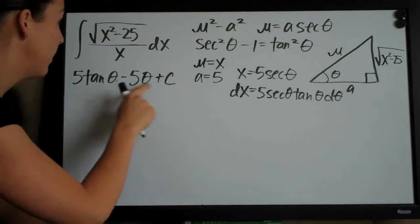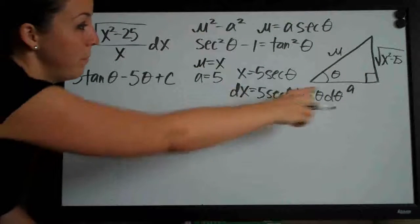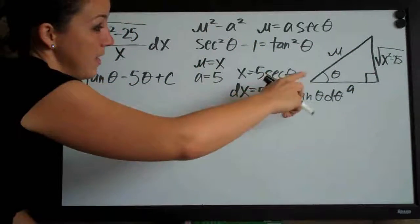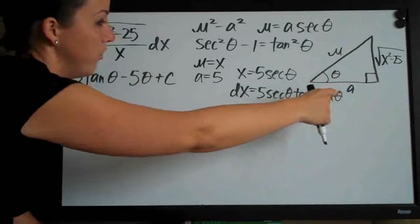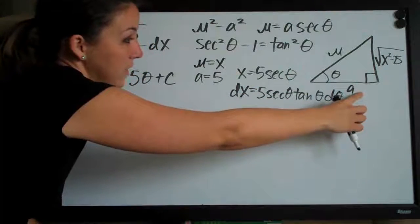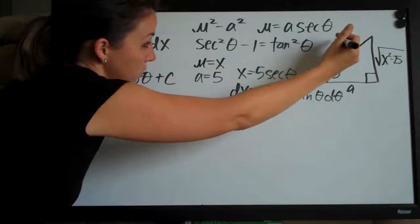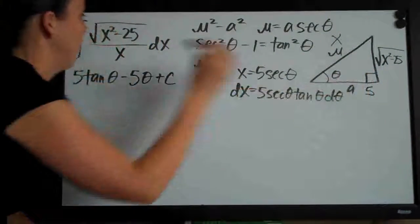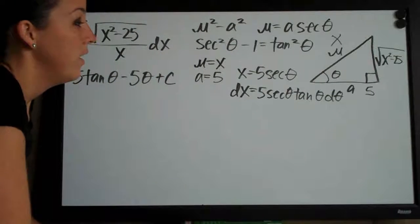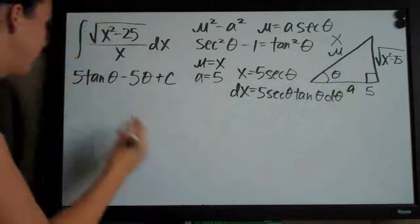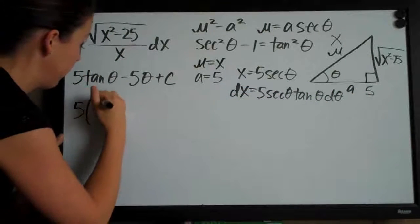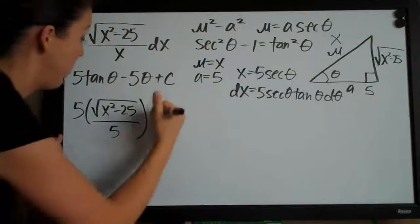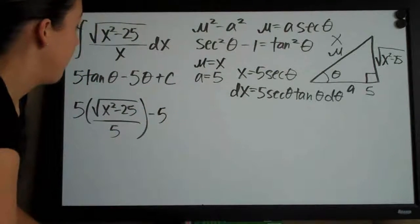We're going to plug in two different things. Using the reference triangle for this identity, the angle theta is positioned so that tangent equals opposite over adjacent. The hypotenuse is always u, which is x; the adjacent side is always a, which is 5; and the opposite side is the square root of x squared minus 25. So tangent theta equals the square root of x squared minus 25 over 5.